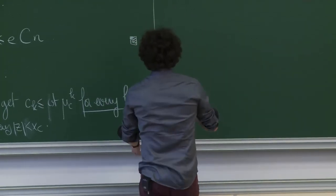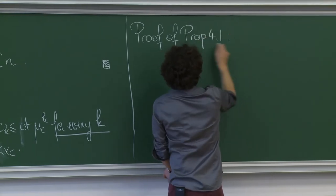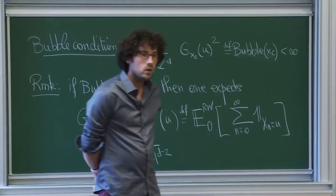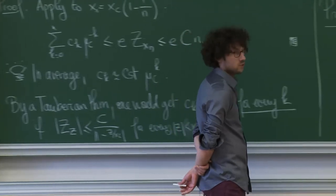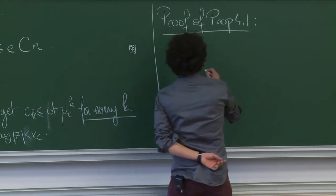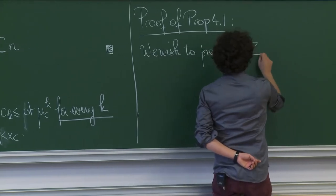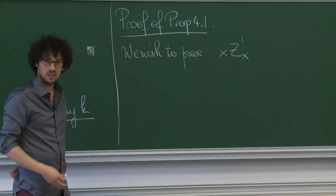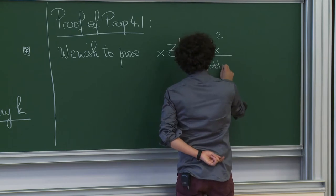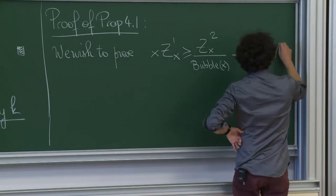Let's now prove proposition 4.1. We are going to do something quite classical in statistical physics: derive a differential inequality for z. We want to see z as a function of x and derive a differential inequality. The differential inequality will be: x times z prime of x is larger or equal to z(x) squared divided by bubble(x), minus z(x). I want this for any x smaller than x_c.